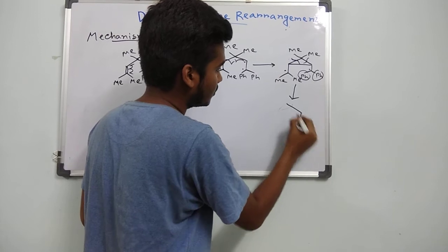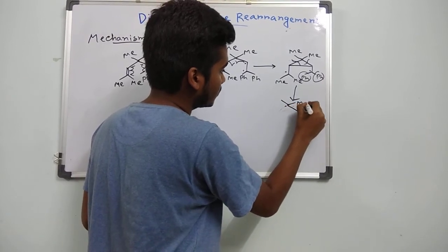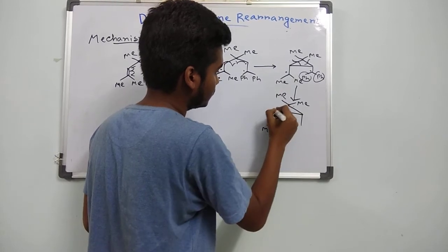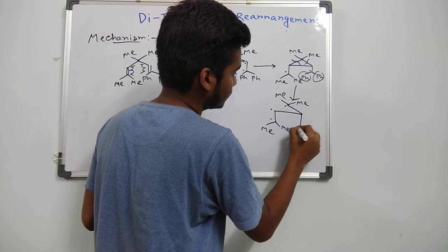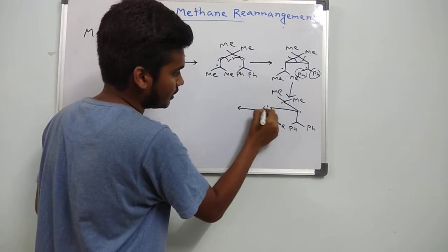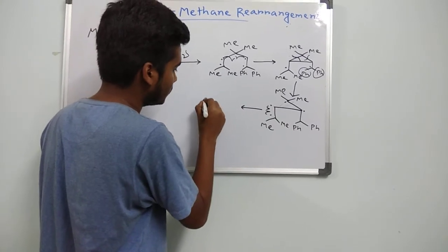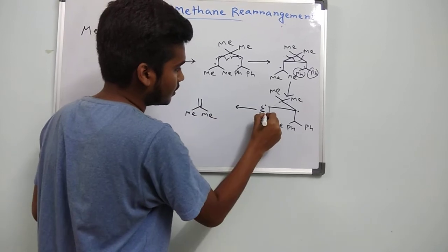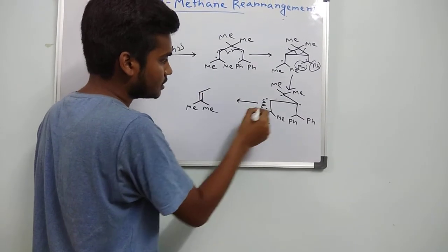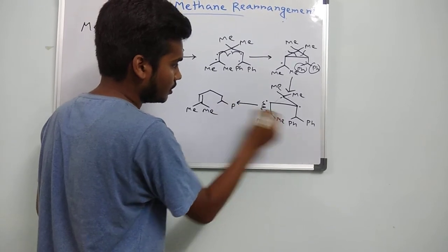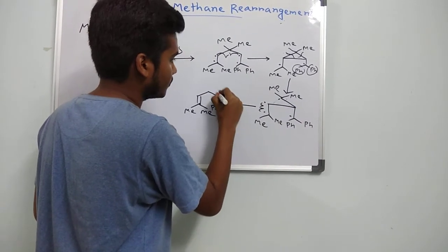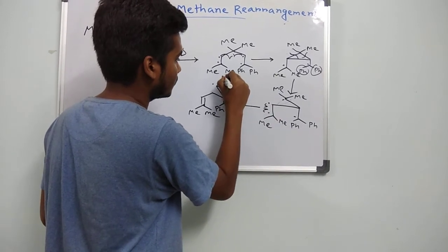So what we will get — we will get this type of product. And then these two radicals will combine to each other to form this double bond. This relatively unstable radical will be stabilized by combining with the other radical, so what we will get then — we will get this product.